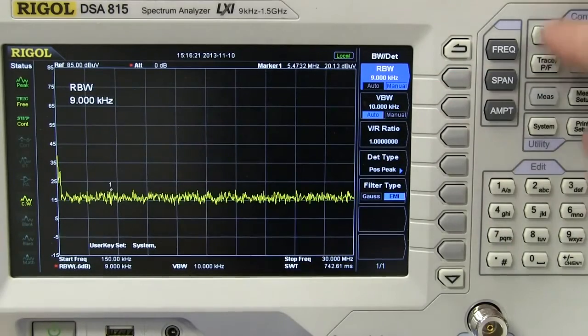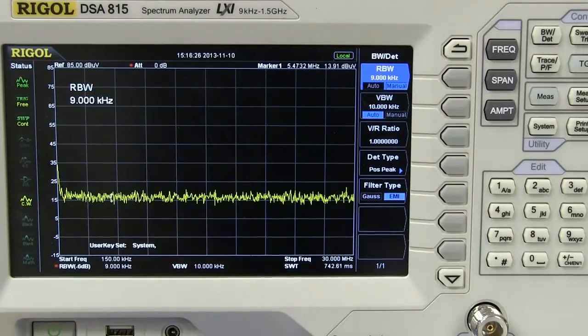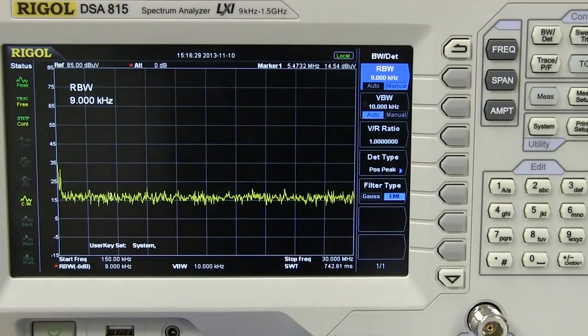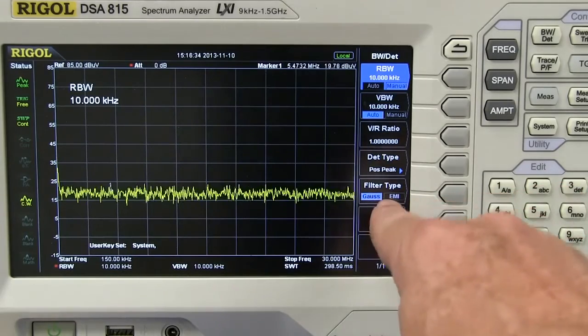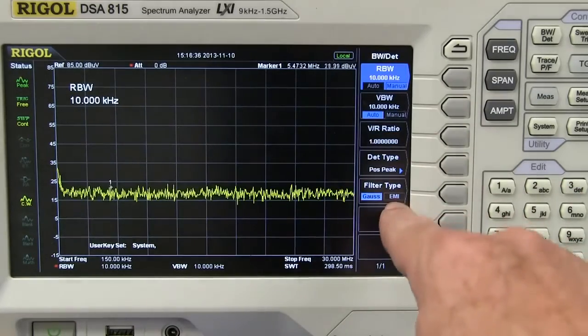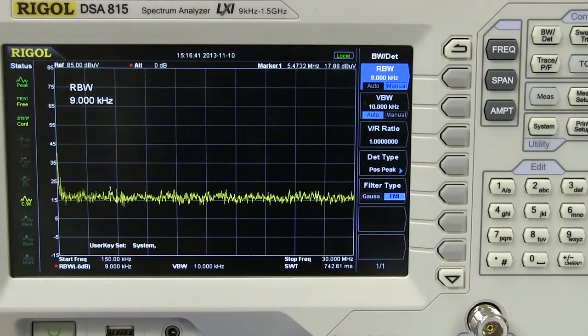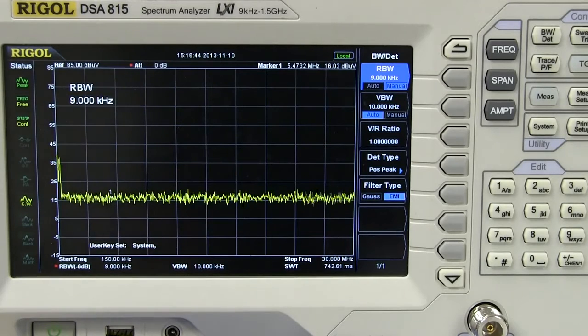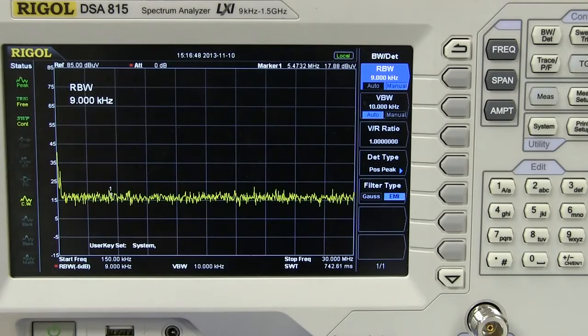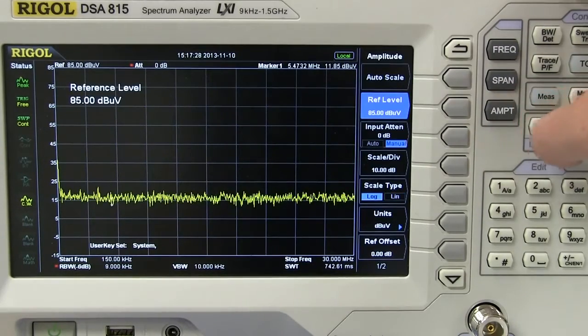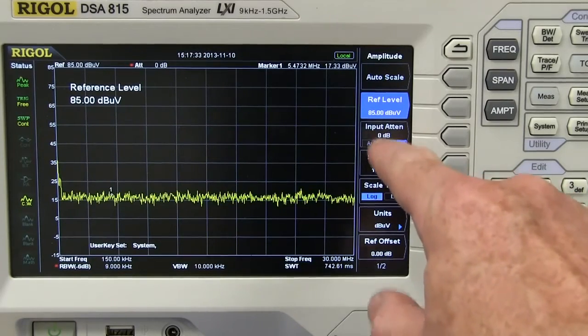Now, we also want to go into our bandwidth detect there, and our resolution bandwidth we want to go into that, so there it is. Currently set to 9 kilohertz, that's what we want it set to for this basic frequency range. Now, the filter type here, Gaussian or EMI, this spectrum analyzer has a specific EMI filter which we want to use if we have it. I think it might even be a software optional extra, but you don't necessarily have to do that if you're using the Gaussian filter, as we'll see in a minute. And if we go into amplitude, we don't want any input attenuator at all at this stage, so we'll leave that set to 0 dB.